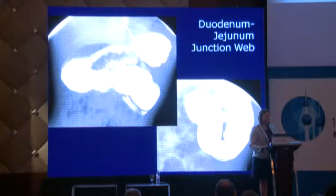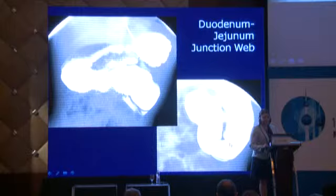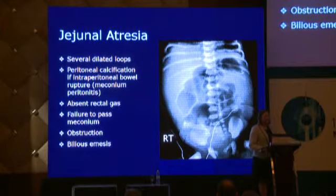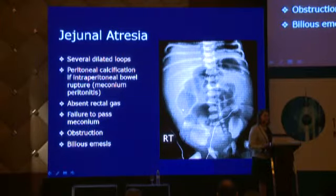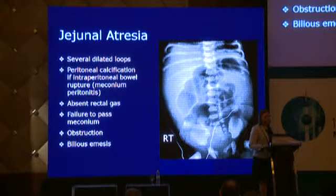Duodenal-jejunal webs can occur anywhere. This one is at the duodenal-jejunal junction — you can see the proximal dilatation and the band-like filling defect that persisted, confirming it was not a transient filling defect. On x-ray in duodenal atresia you see several proximally dilated bowel loops. Look for ancillary findings such as peritoneal calcification along the right flank, which can layer adjacent to the liver and extend into the scrotum in male infants — this gives a clue to intra-abdominal perforation.